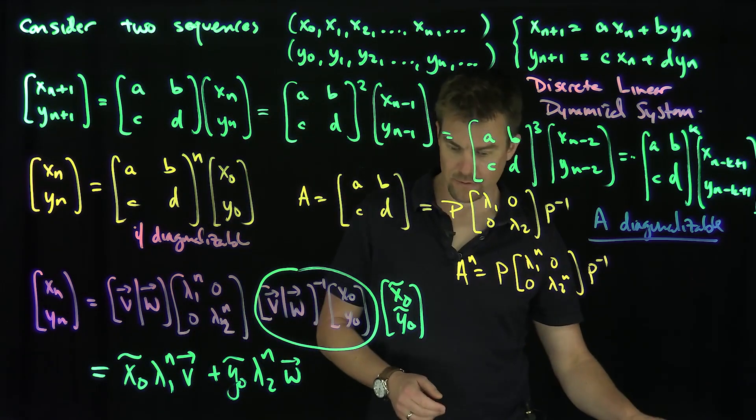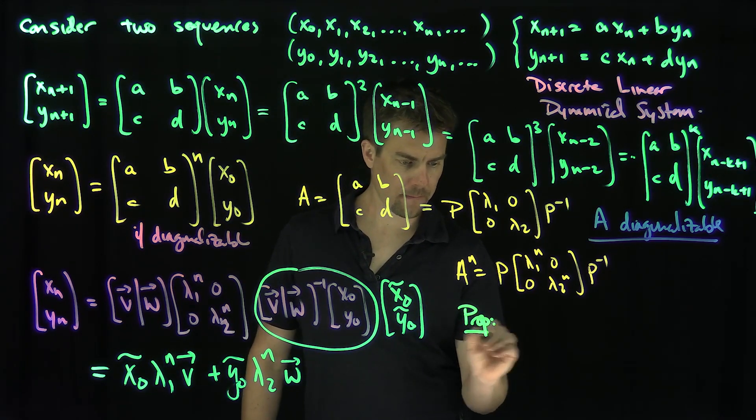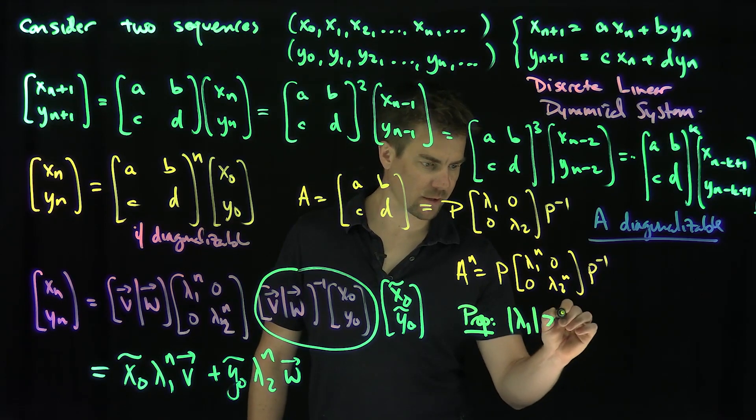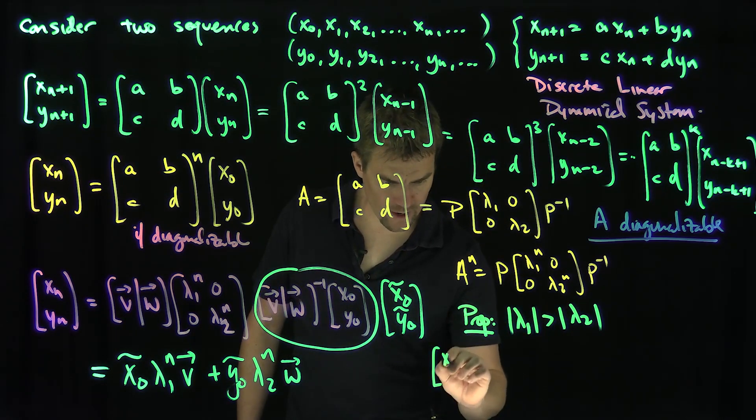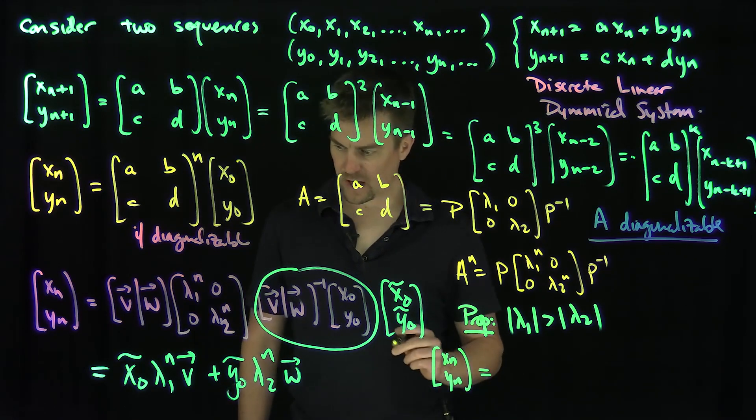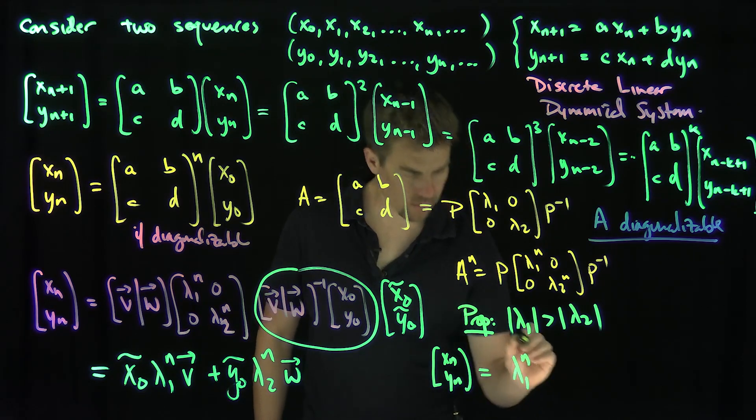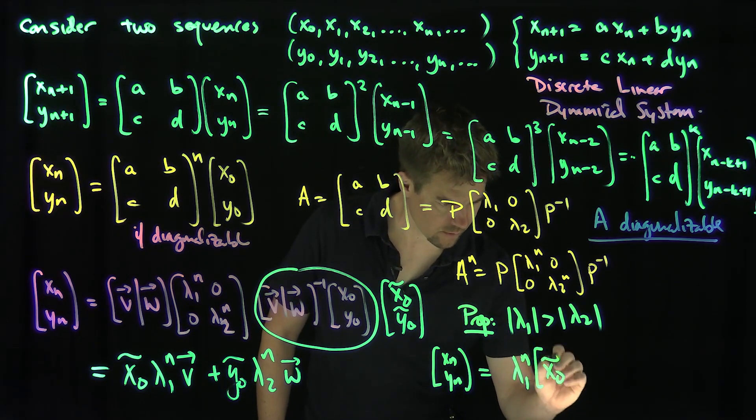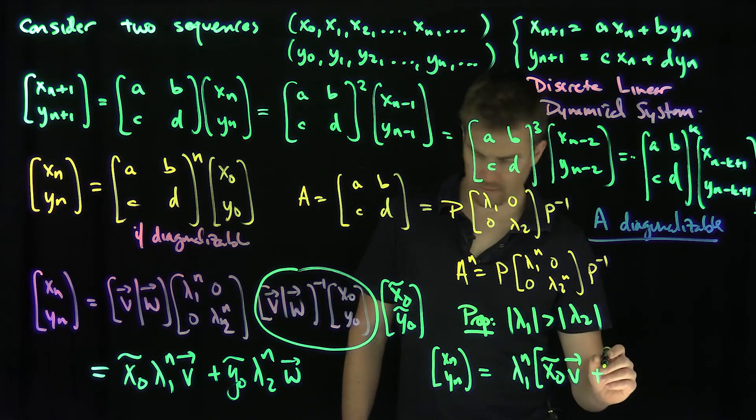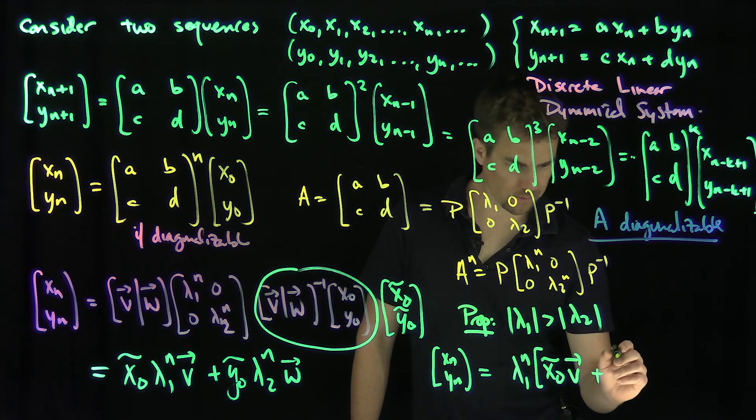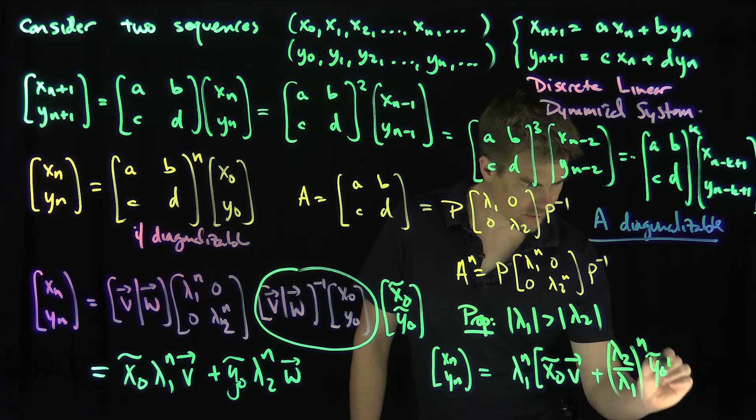Suppose, for instance, here's a proposition: if lambda 1 in absolute value is bigger than lambda 2, then I can factor out our solution. Our x n, y n is going to be, I'll pull out lambda 1 to the n, and then you have x 0 tilde and then V, plus if I pull lambda 1 out, we're going to have lambda 2 over lambda 1 to the power of n, y 0 tilde, W.